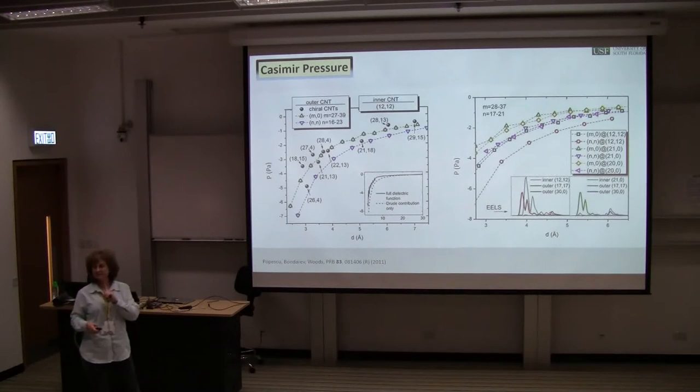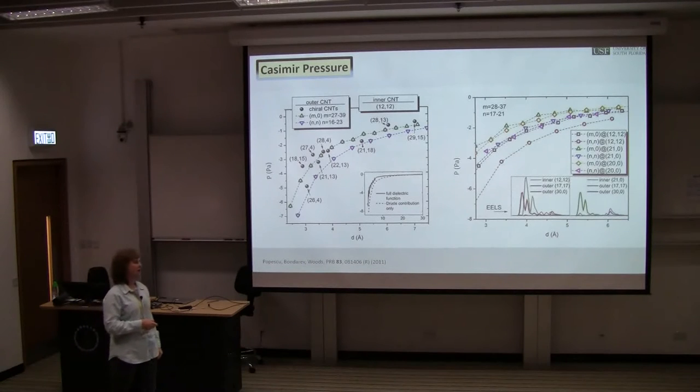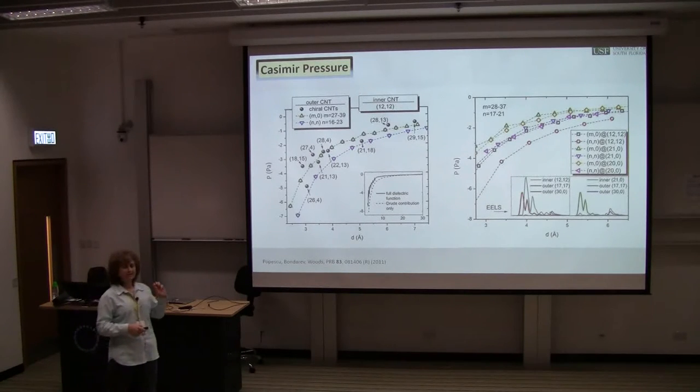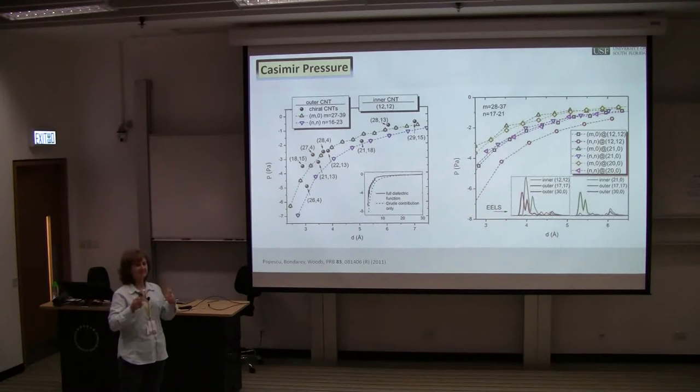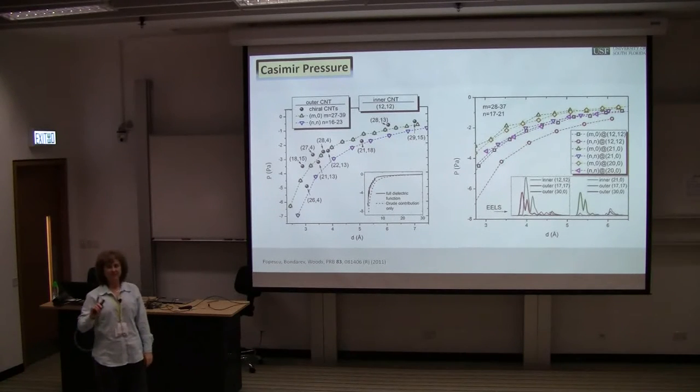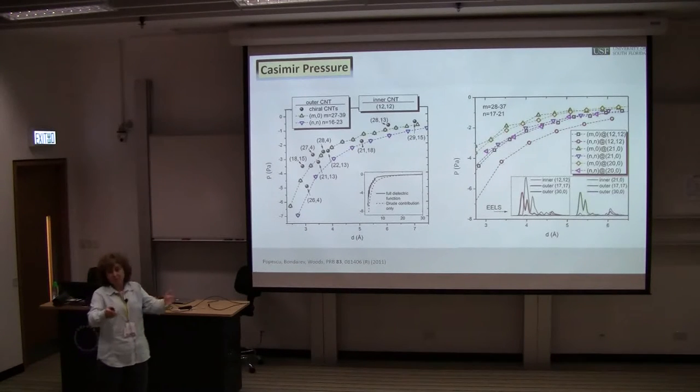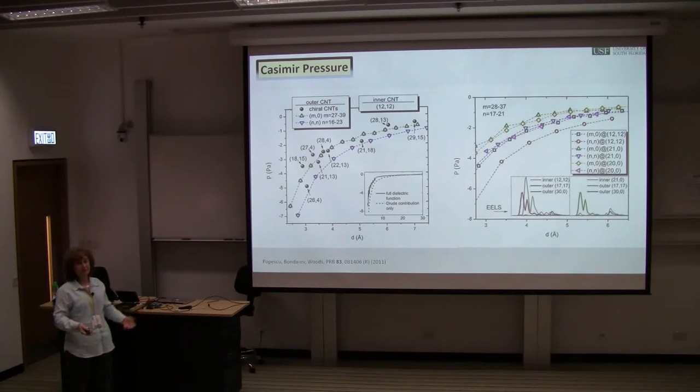We find that there is one specific set of carbon nanotubes for which the pressure is the strongest, the interaction is the strongest. That happens to be for metallic armchair nanotubes. The reason is this can be related to electronic energy loss spectrum. For those tubes that have the strongest electronic energy loss spectrum that are overlapping, the Casimir pressure is strongest. Subsequent experimental measurements have shown that armchair double-walled carbon nanotubes have maybe four to one probability to be synthesized as opposed to any other choice. Perhaps that could be one factor for preferential synthesis in the lab.